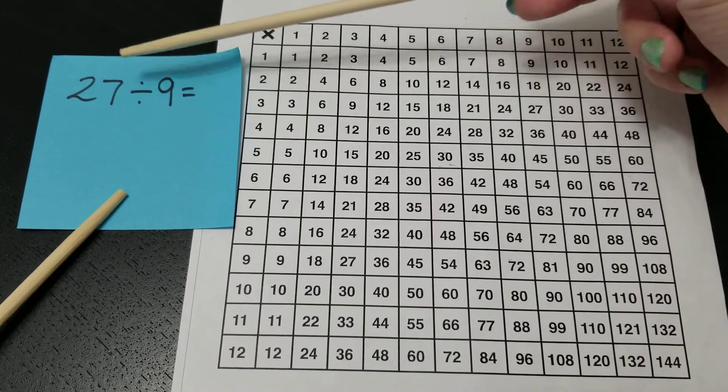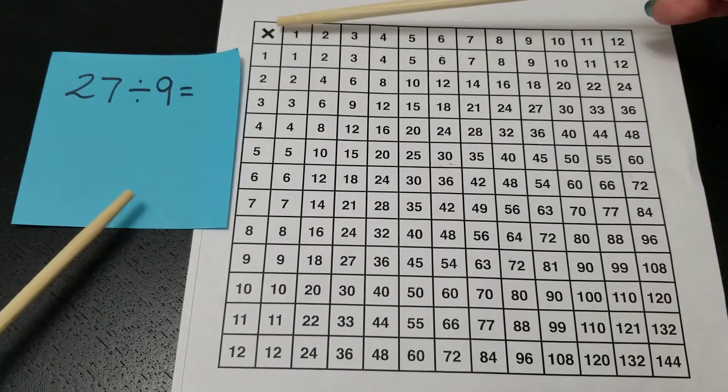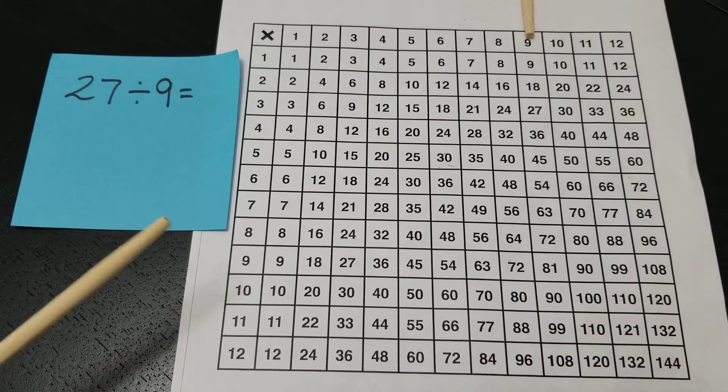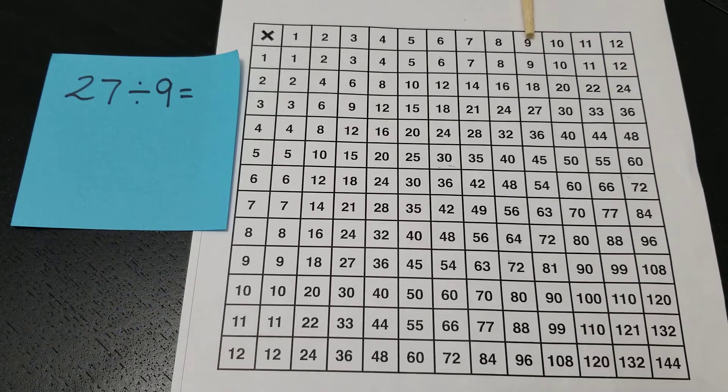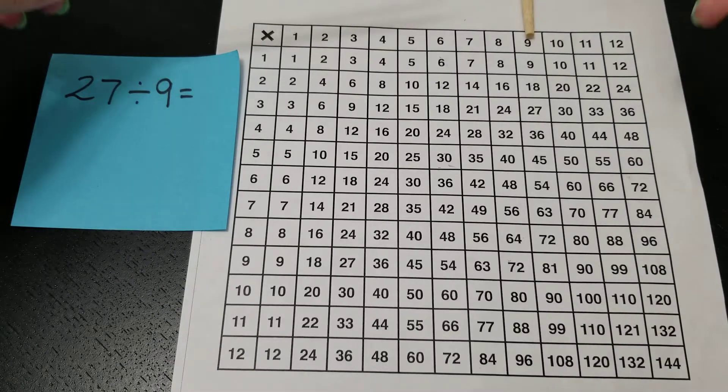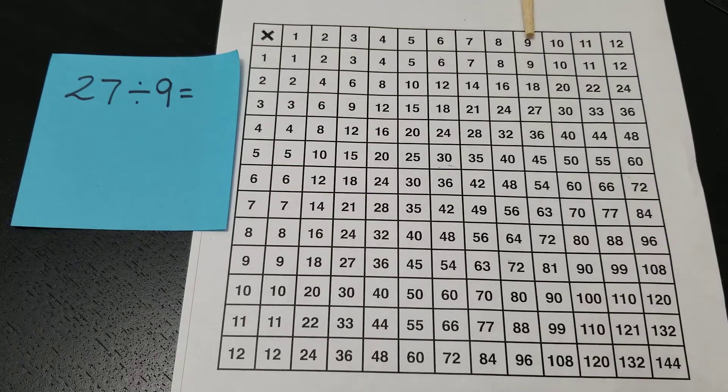So 27 divided by 9. We're going to go across the top until I find 9. There it is. I use chopsticks. Quite often other people may use fingers, rulers, pencils, any other object that is flat or straight will allow you to follow your lines. Some people don't need an object and they'll just use counting instead.